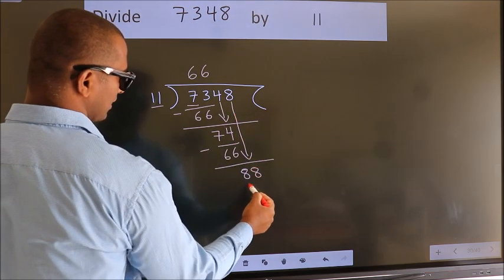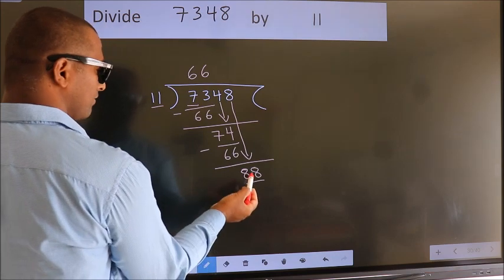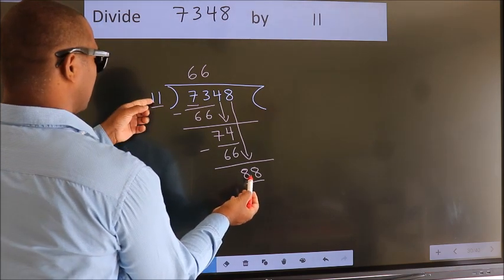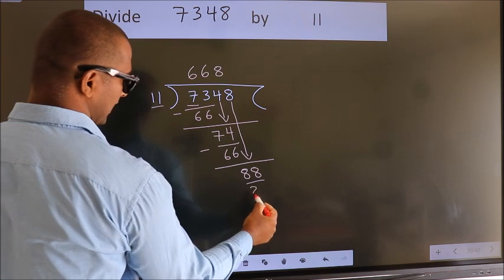So 8 down. 88. When do we get 88 in the 11 table? 11 times 8 equals 88.